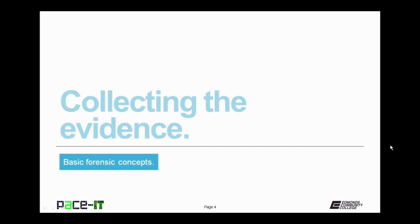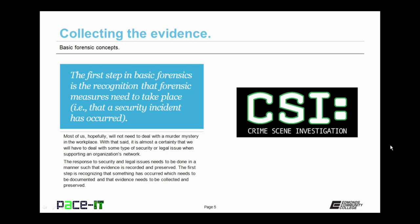We will begin this session by talking about actually collecting the evidence. The first step in basic forensics is the recognition that forensic measures need to take place, as in that a security incident has occurred. Most of us, hopefully, will not need to deal with a murder mystery, at least not in the workplace. With that said, it's almost certain that we will have to deal with some type of security or legal issue when supporting an organization's network. The response to security and legal issues needs to be done in a manner such that evidence is recorded and preserved. The first step is recognizing that something has occurred which needs to be documented and that the evidence needs to be collected and preserved. That's the first step in forensics, at least as far as forensics pertains to network administration.